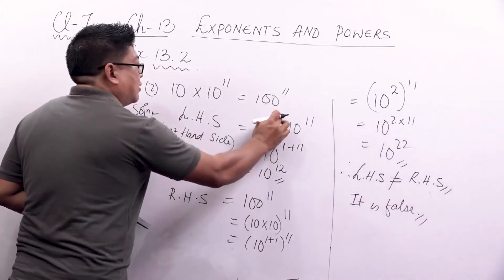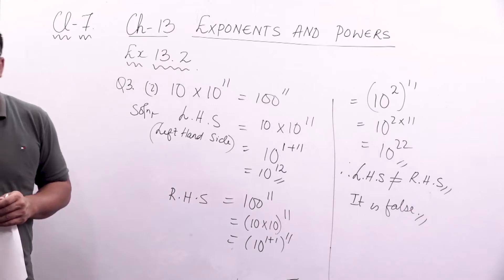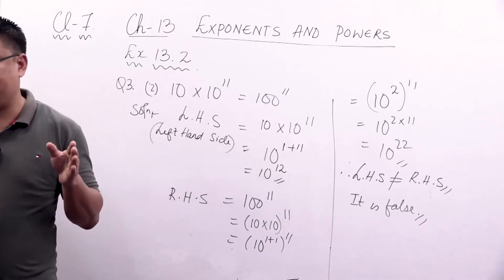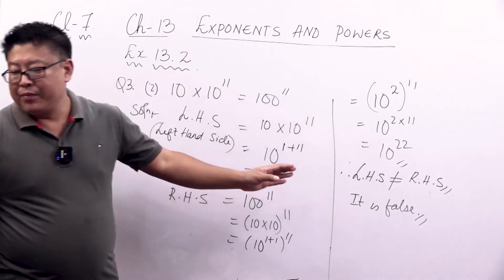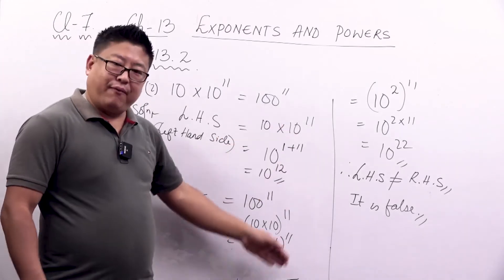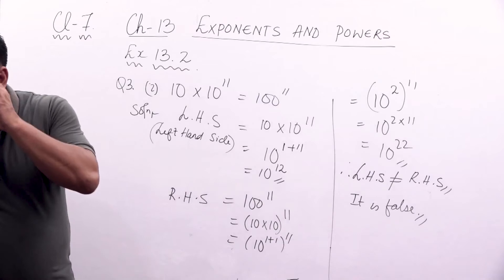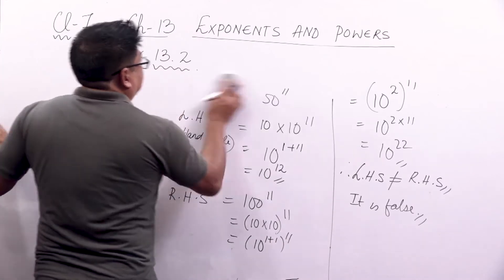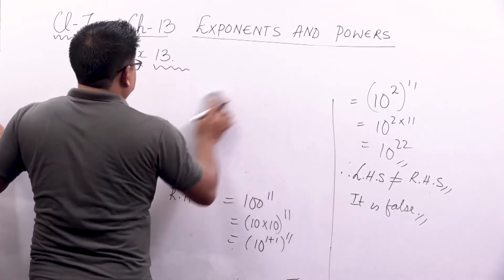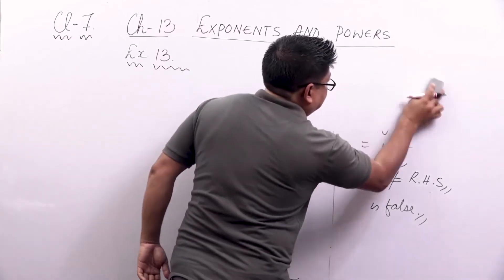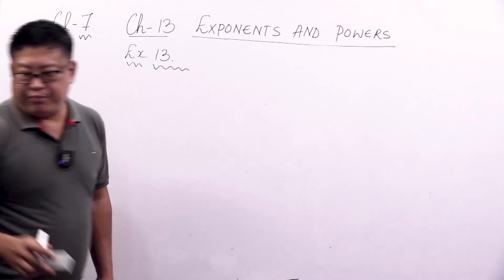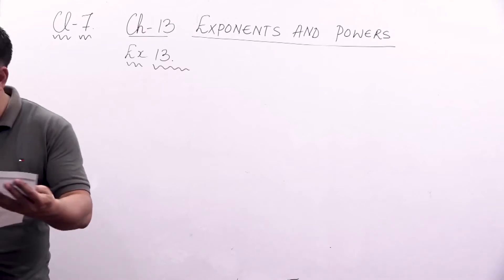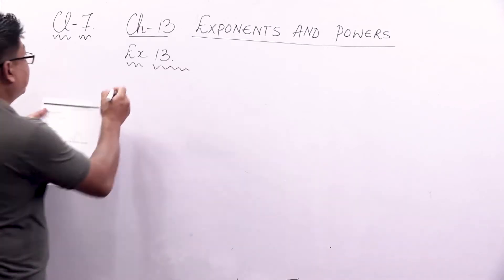So that statement is false. For the rest of the questions you simply have to simplify the numbers given and compare to see whether the statement is true or false. With that we end this part. Before we go to the next exercise, let's look at a few more questions — question number four.